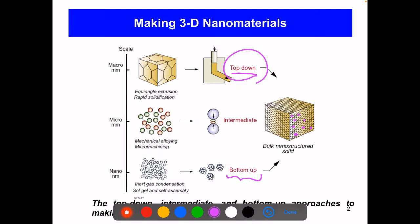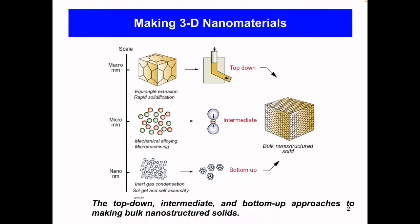On the contrary, the top-down approach creates this chip like an artist carving a sculpture. You take a bigger material and basically carve it to produce what you want. So the bottom-up approach is building your material like a Lego part, brick by brick. These are the top-down, intermediate, and bottom-up approaches to making bulk nanostructured solids.